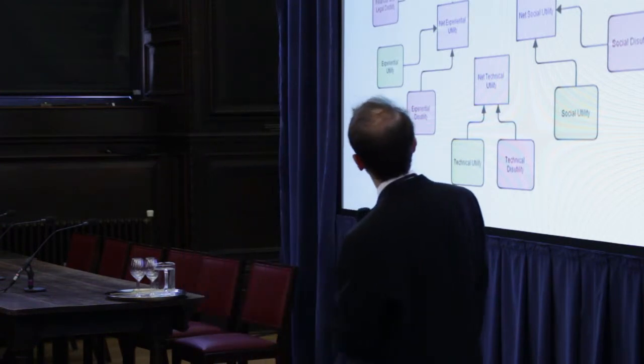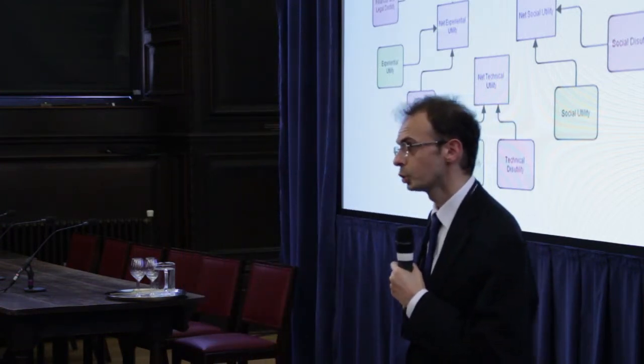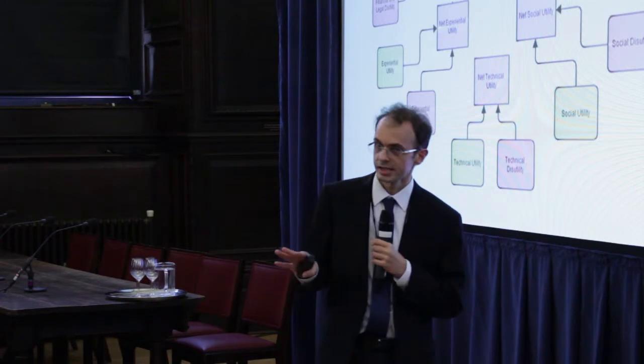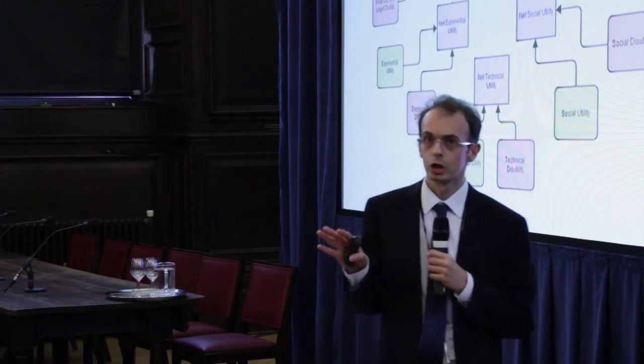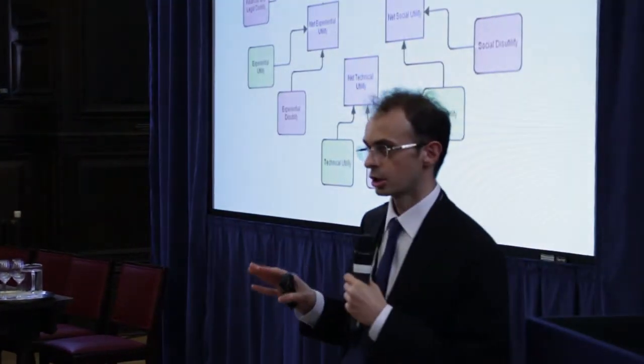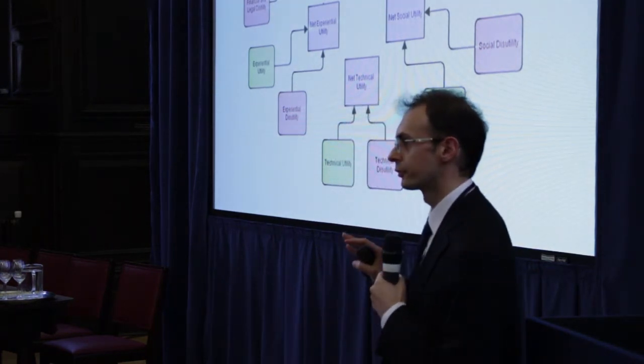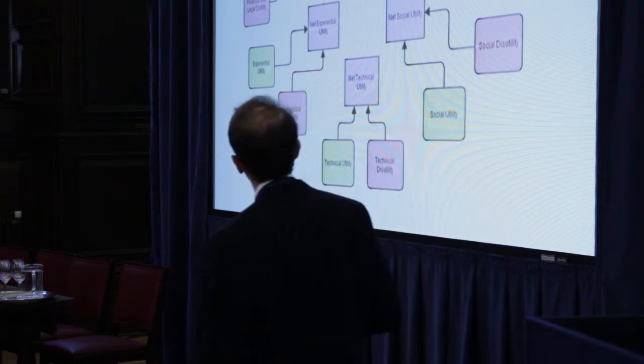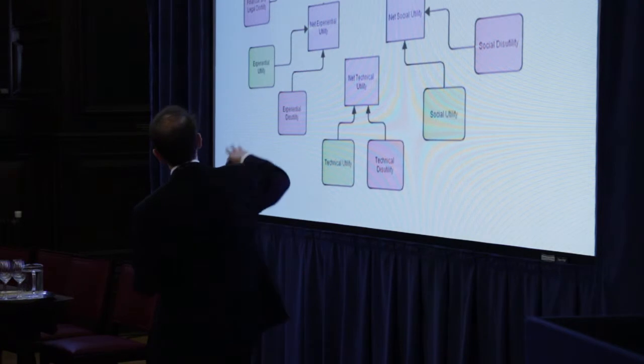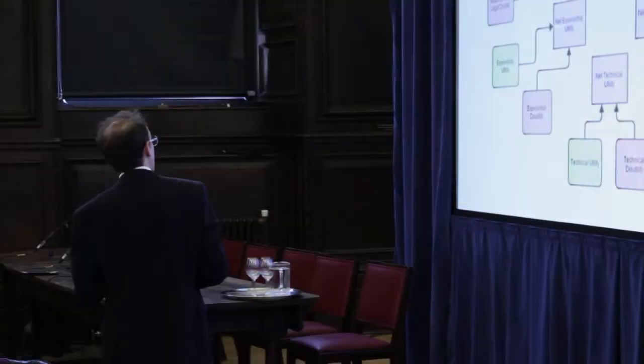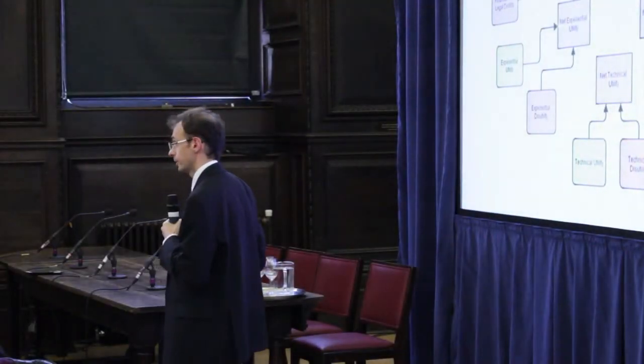Now, why do people file share unlawfully? What you will find in the report is a little model which classifies different sources or different determinants of unlawful file sharing. We classify them in five groups. There are considerations of financial and legal utility and disutilities, so financial and legal determinants. The differential price between legal and illegal, and the legal barriers, the legal framework.